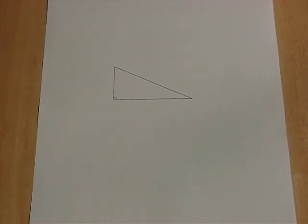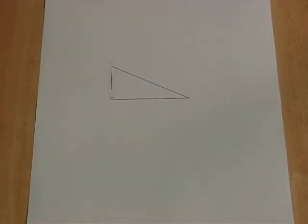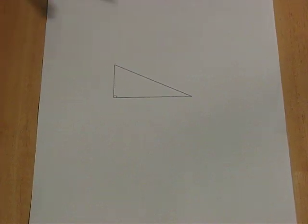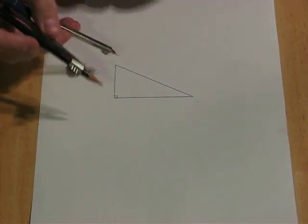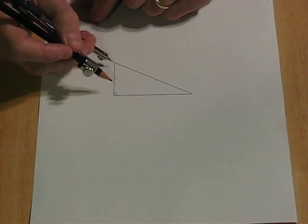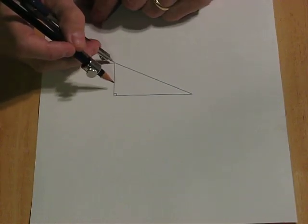Now let's see what happens when we construct the circumcircle of a right triangle. So right angle here, I'm going to bisect two sides, find a perpendicular bisector of two sides and get the intersection point and watch what happens.